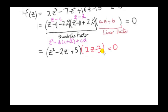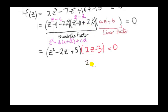Now that we have this linear factor, we can get the third root by setting it equal to zero. We have a product of factors giving us zero, so the only way to get zero is if one of them is zero. We've already seen that the first factor gives roots 1 minus 2i and 1 plus 2i. Setting the second factor 2z minus 3 equal to zero, the whole product is zero when z equals 3 over 2.